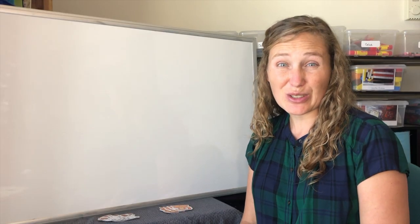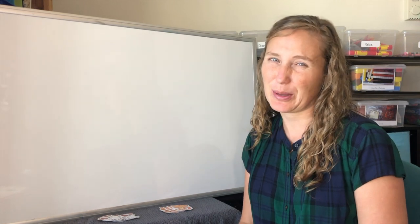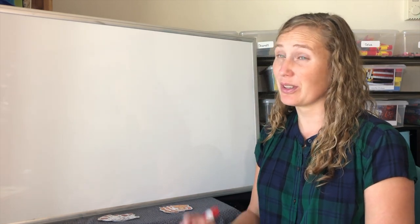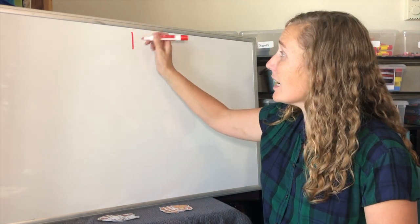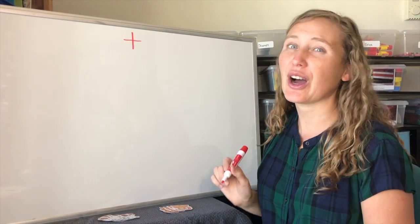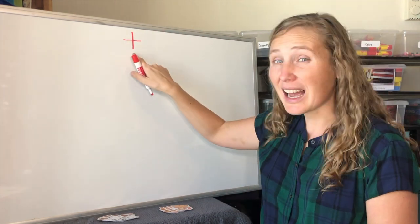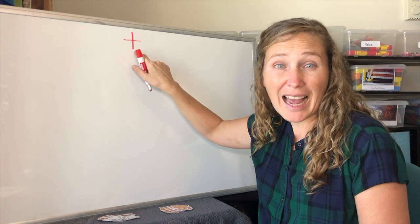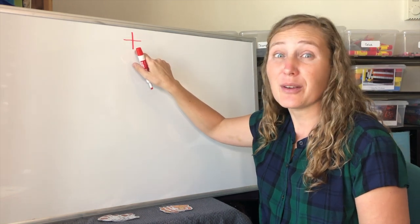Now let's do the plus symbol. The plus symbol is one line down and one line across. Plus, it means to add, or that you have more of.